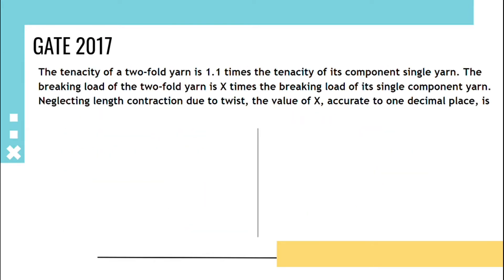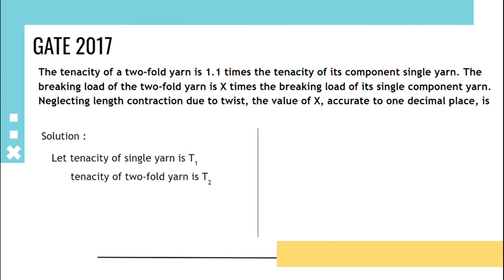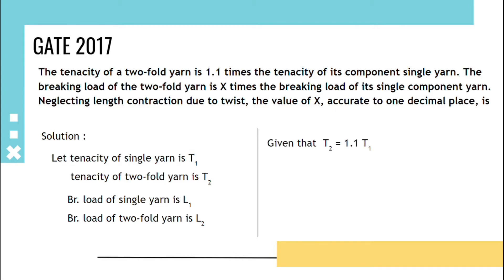The tenacity of a two-fold yarn is 1.1 times the tenacity of its single component yarn. The breaking load of two-fold yarn is x times the breaking load of its single component yarn. Neglecting length contraction due to twist, the value of x accurate to one decimal place is asked. Let us assume tenacity of single yarn is T1, tenacity of two-fold yarn is T2; breaking load of single yarn is L1, and breaking load of two-fold yarn is L2.